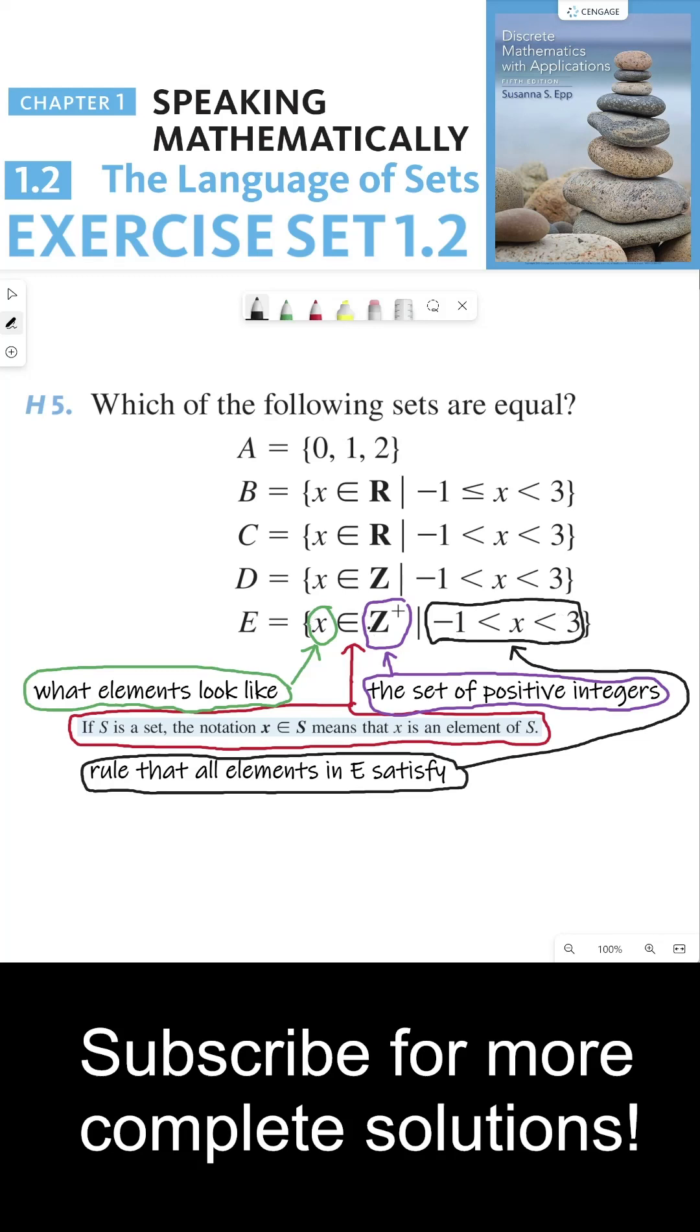But according to this preface here within the set builder notation, we're only working with positive integers. So X can only represent a positive integer. So X cannot be 0, even though 0 is in between negative 1 and 3. X cannot be 0 because X is an element of the set of positive integers.